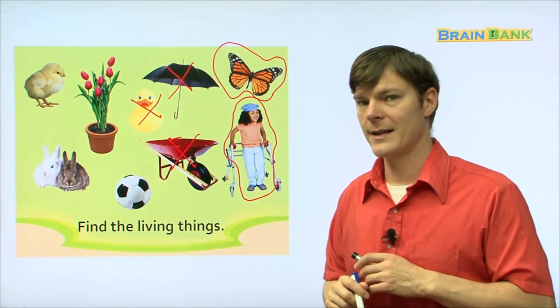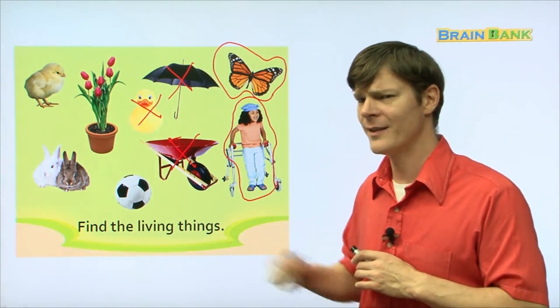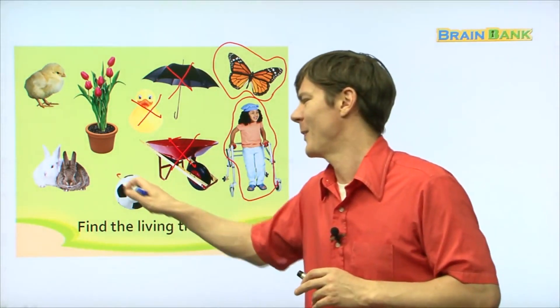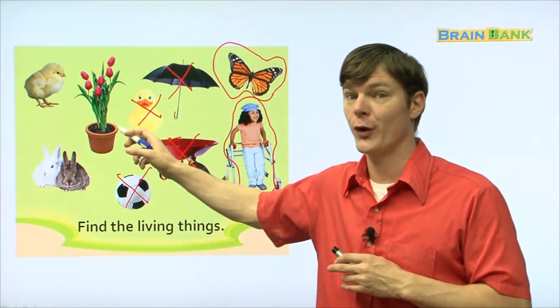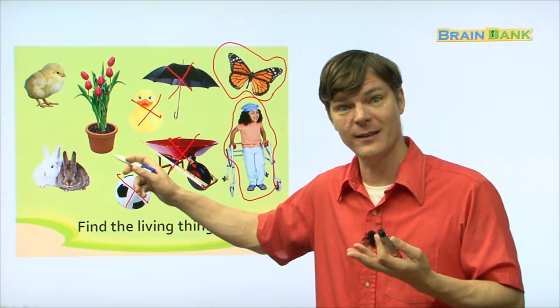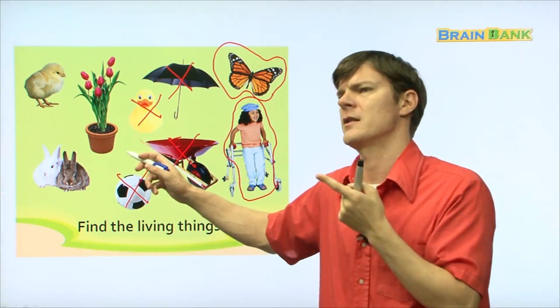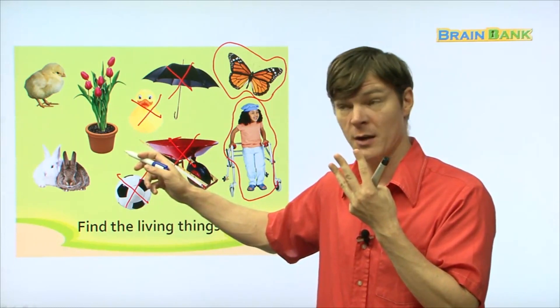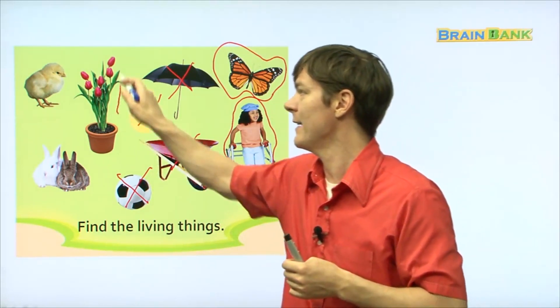No. Why? Because it does not need water, it does not need food, it does not need sunlight or it doesn't have senses. So it's not a living thing. So we can put an X on this too. And then this. Oh, what is that? That is a rubber ducky. Is it real? No. So it's not a living thing. So X. And then this, what's this? That's a soccer ball. Chukkukong. Is a chukkukong a living thing? Does it need water? Does it need food? Does it have senses? No, no, no. So put an X on it.